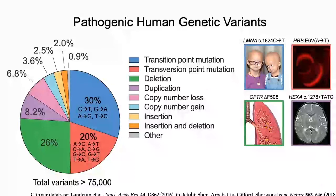Human gene variants that cause genetic diseases come in many varieties. They include the transition point mutations, shown here in blue, which cause conditions such as progeria, the rapid aging disease. The transversion point mutations, represented by the red wedge of this pie chart, cause conditions including sickle cell disease. And small insertions and small deletions cause diseases such as Tay-Sachs disease and cystic fibrosis, respectively. A long-standing goal of the life sciences has therefore been to develop the ability to install or correct all types of pathogenic mutations so we can study or treat the broadest possible range of the resulting diseases.